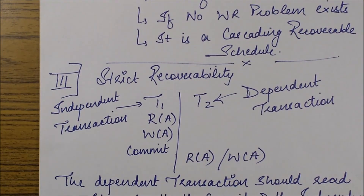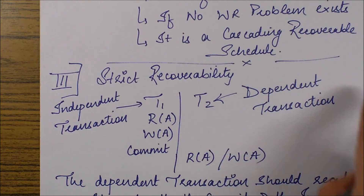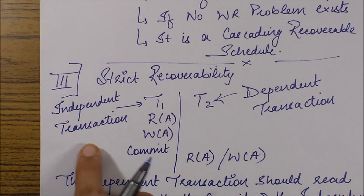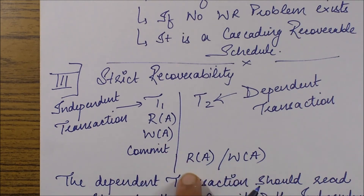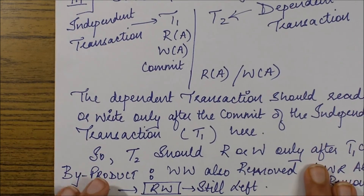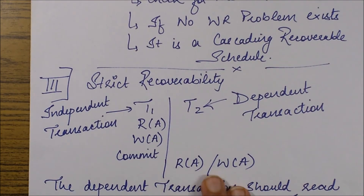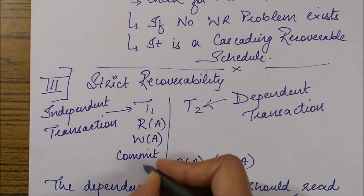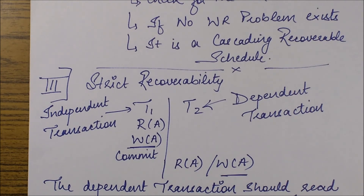The last and final level of recoverability is the strict recoverable schedule. It says that the dependent transaction — the one which completes its work later — will only start its work after the independent transaction commits. So T2 will only start to perform read or write after T1 commits. This is a very strict recoverability condition. By maintaining this condition, the write-write problem is also removed, and write-read was already removed, so we have two problems removed at this highest level.